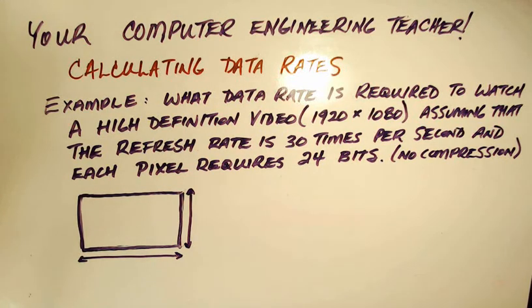Here's the question. What data rate is required to watch a high definition video, assuming that the refresh rate is 30 times per second and each pixel requires 24 bits? We're going to keep this simple and assume that there is no compression involved in this calculation.